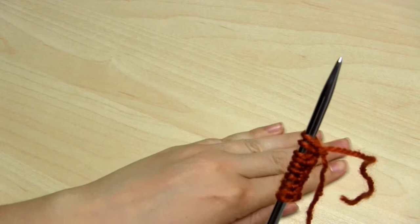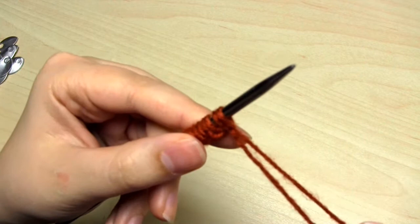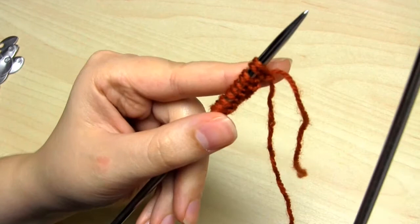Scales are nearly always added to stockinette stitch. If you use garter stitch, you can only add the scales every other row, or you have to add the scales on both sides of your knitting.